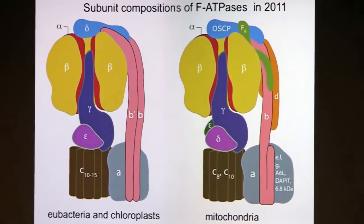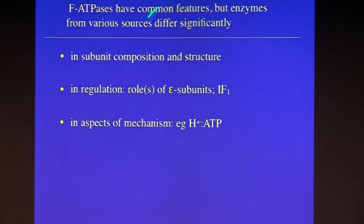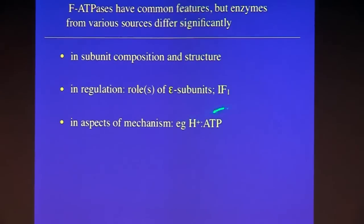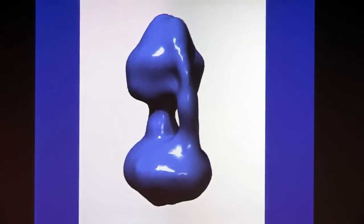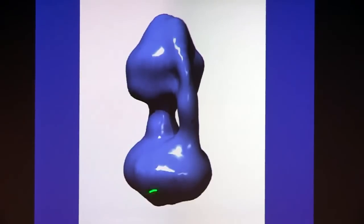The two enzyme types differ somewhat in subunit composition and structure, most significantly in how they are regulated, and there are very significant differences in the mechanism of proton translocation and ATP generation. The overall structure determined experimentally by cryo-electron microscopy is shown here — a model at about 30 angstroms resolution, arrived at by averaging single particles observed in vitreous ice.